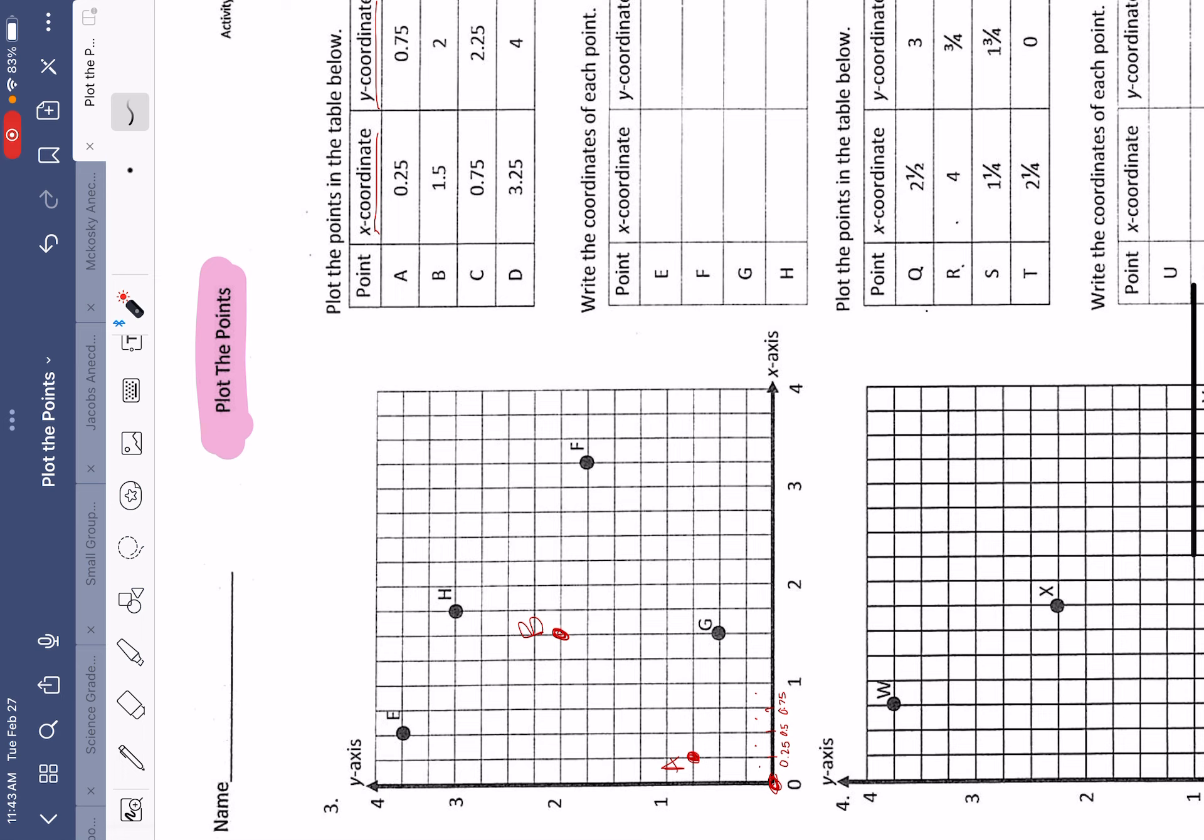Now we've got point C, where we're going to travel over to the right from the origin 75 hundredths. And then we're going to go up along the y-axis 2 and 25 hundredths. There's about 1, there's about 2. 2 and 25 hundredths would be about there. So I'm going to plot my point right there. Just to make sure, I'm going to... yep, that works. You can also use little dotted lines to make sure you're on the right track, but we're just not going to draw solid lines.